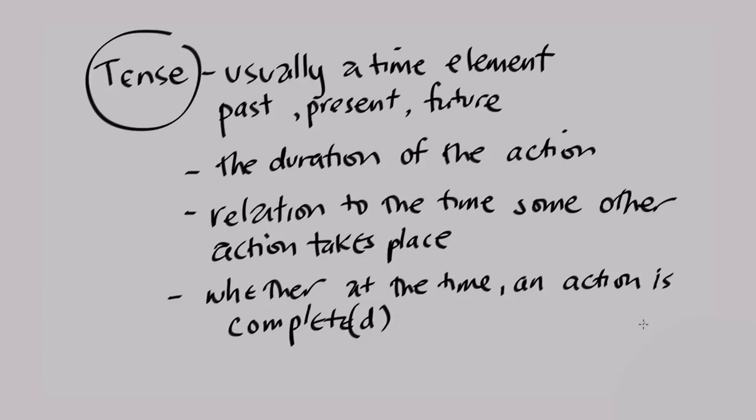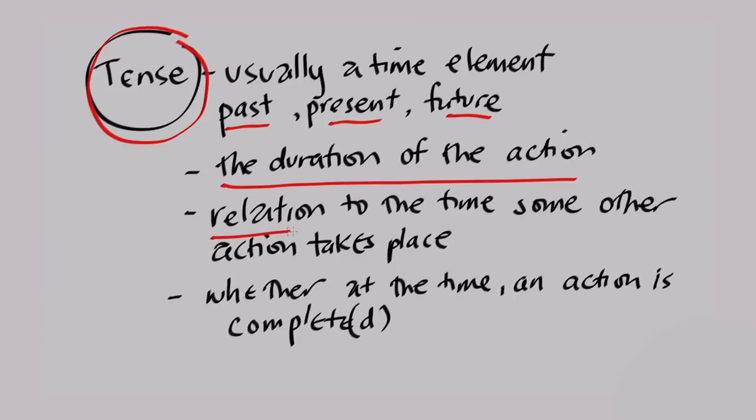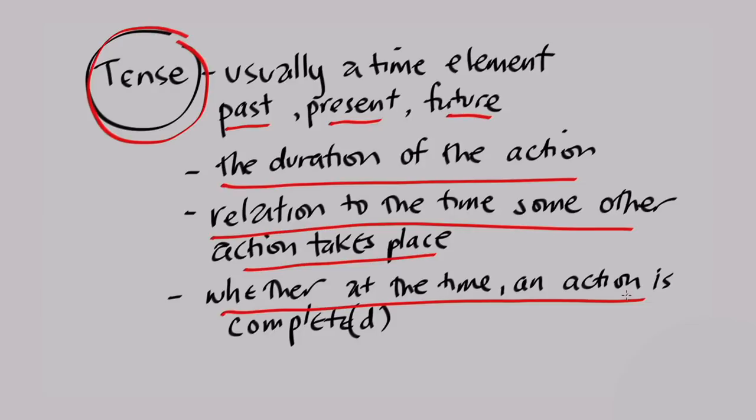Greek verbs — and I promise you I've got it on one page, so that tells you it's succinct. In Greek verbs, you have tense, usually a time element — past, present, or future. Those are just the basic ones. Tense also covers the duration of the action, the relation to the time some other action takes place, and whether an action is completed.